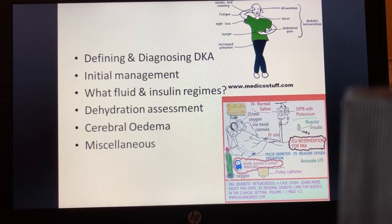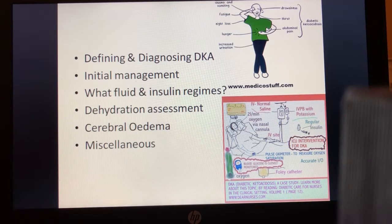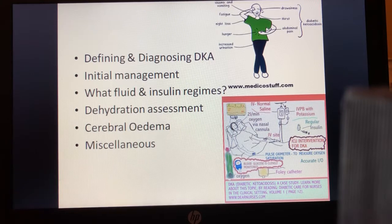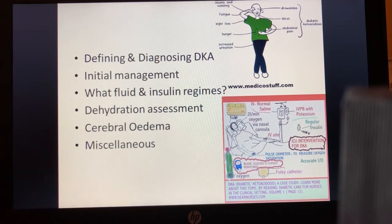We'll go through some definitions, how we might diagnose diabetic ketoacidosis, some initial management, and what NICE says particularly around fluids and insulin. We'll also discuss difficulties of dehydration assessment, the single largest cause of mortality — cerebral edema — and finish with a few miscellaneous points. The symptoms and signs related to DKA include those related to diabetes on the left, and those related to ketoacidosis on the right.